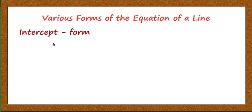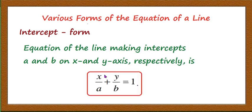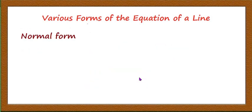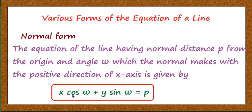The fourth is the intercept form: the equation of the line making intercepts a and b on the x and y axes respectively is x/a + y/b = 1. The fifth and last is the normal form: the equation of the line having normal distance p from the origin and angle omega which the normal makes with the positive direction of the x-axis is x cos omega + y sin omega = p. You must memorize all five standard forms of the equation of the line.